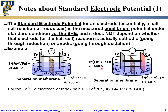But no matter what, the standard electrode potential E0 for the iron 2+ / iron electrode — or redox pair — is always minus 0.440 V, because it is measured versus SHE.